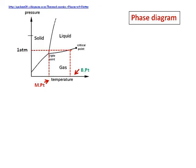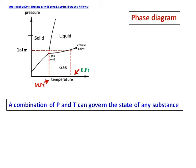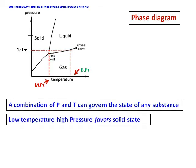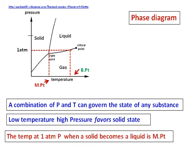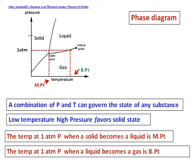What does the phase diagram give us? It is a combination of pressure and temperature, and it governs the state of any substance. Looking at the phase diagram, you realize that low temperature and high pressure usually favors the solid state, while low pressure and high temperature favors the gas state. The temperature at one atmospheric pressure when the solid becomes a liquid is the melting point, and when the liquid becomes a gas, it's the boiling point.